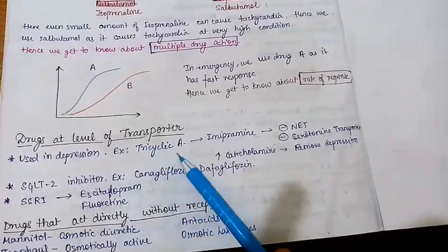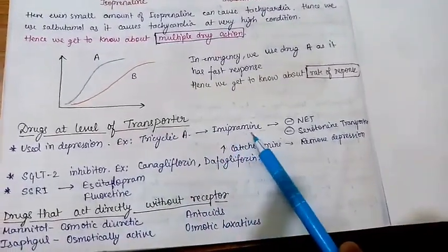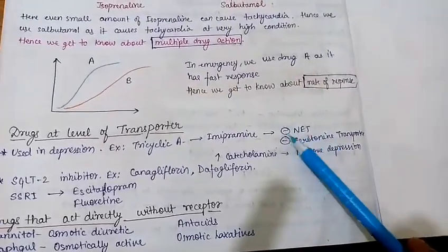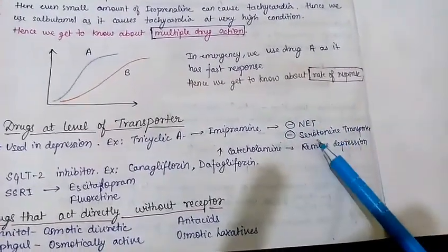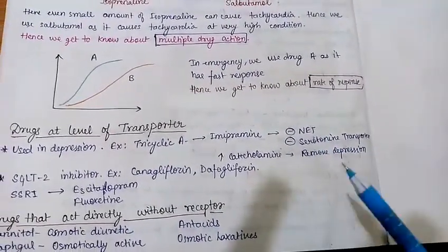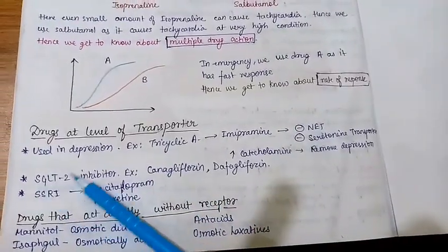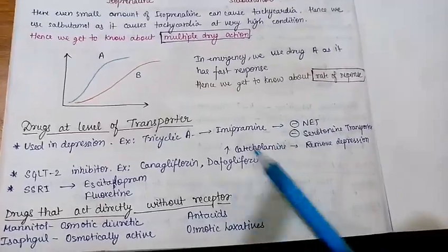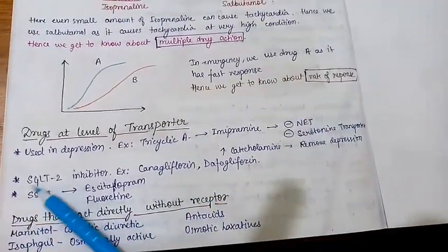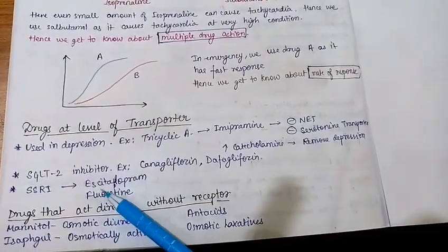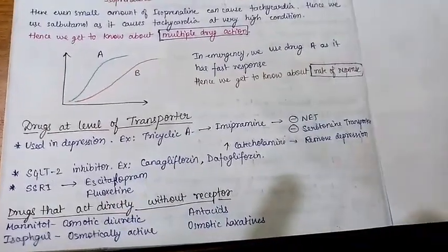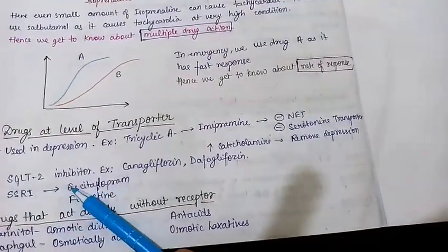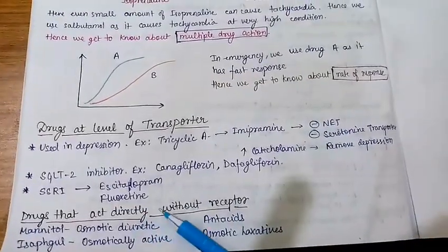Some drugs act on the level of transporters. Antidepressants such as imipramine inhibit norepinephrine reuptake — there is a norepinephrine transporter which helps in reuptake of norepinephrine — and also serotonin transporters. The next example is SGLT2 inhibitors, such as canagliflozin and dapagliflozin, used in diabetes. The next one is SSRIs — selective serotonin reuptake inhibitors — examples are escitalopram and fluoxetine.